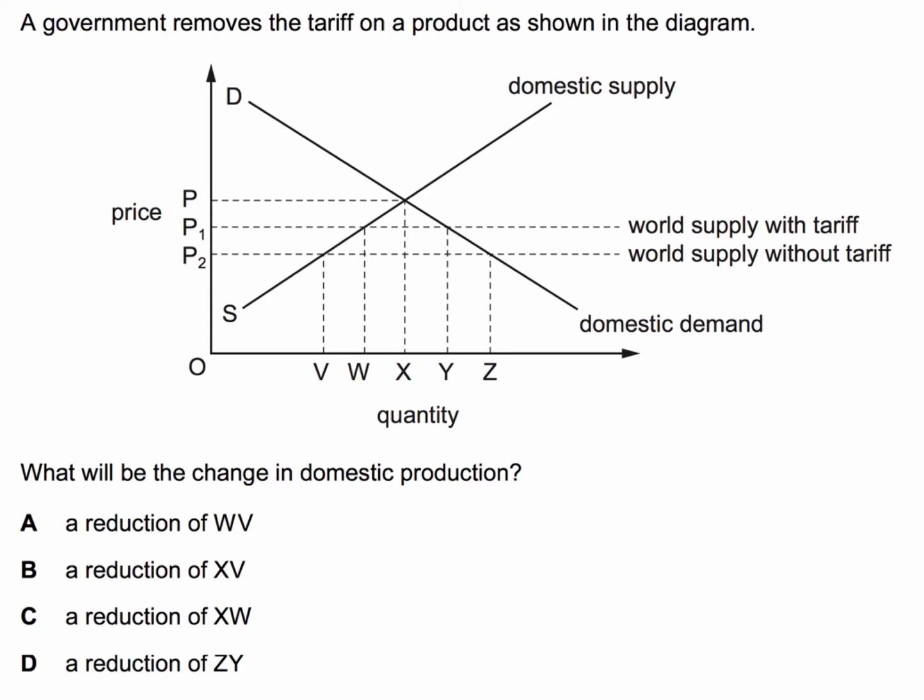This question is about import tariffs. A government removes the tariff on a product as shown in the diagram. You have the domestic supply and demand of a product — let's say the supply and demand for steel — a world supply with the tariff, and a world supply without the tariff. The question is: what will be the change in domestic production, in other words domestic supply?